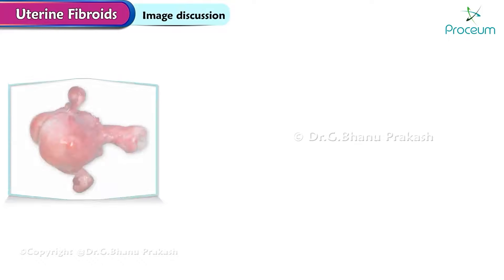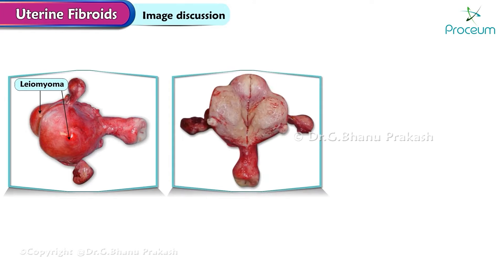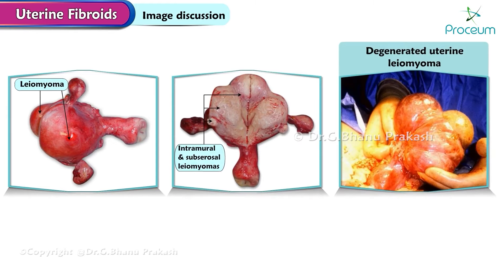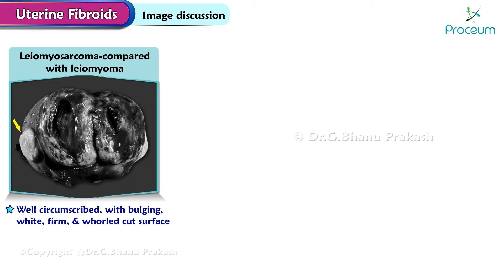Image-based discussion: here is a hysterectomy specimen showing multiple leiomyomas. Here is a bivalved hysterectomy specimen showing intramural and subserosal leiomyomas. Here is a gross intraoperative photograph of a degenerated uterine leiomyoma; this benign neoplasm can mimic an ovarian tumor. Here is a leiomyosarcoma gross appearance compared with leiomyoma: the small nodule on the left is well circumscribed with a bulging, white, firm, whorled-cut surface typical of leiomyoma; the large, soft, hemorrhagic, and fleshy mass represents a leiomyosarcoma.